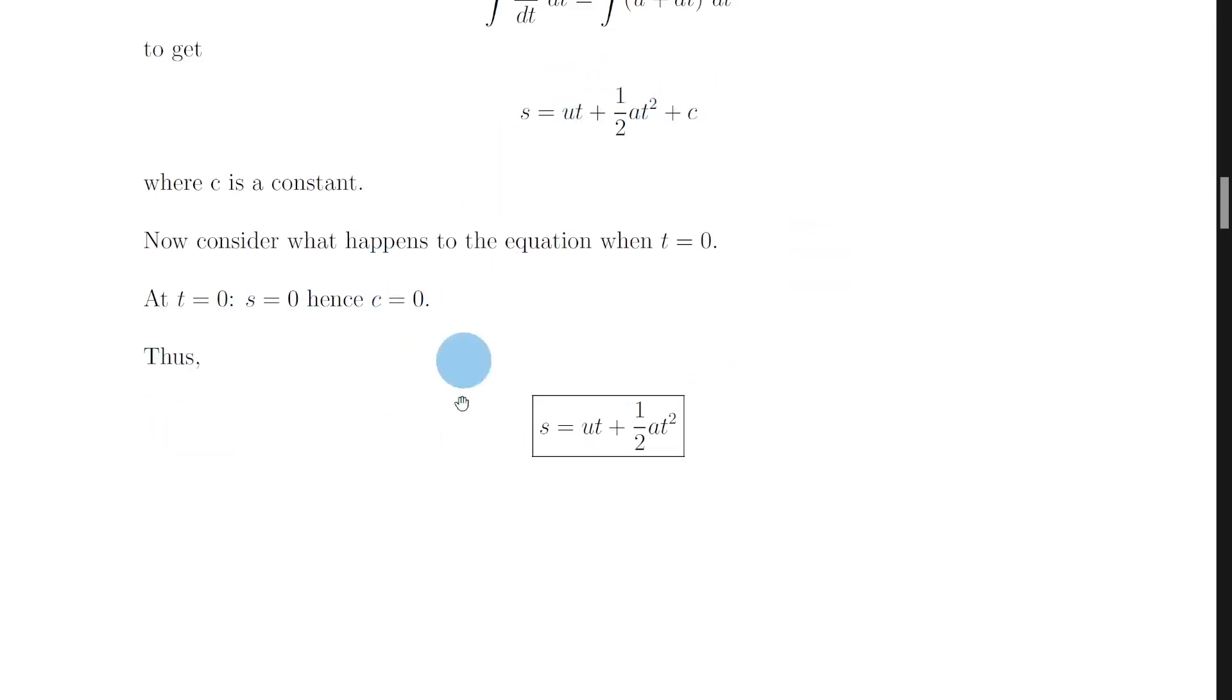And that means we can simplify this to just s equals ut plus a half at squared which is our second equation of motion.